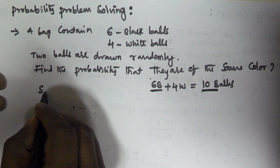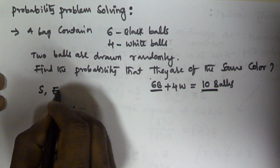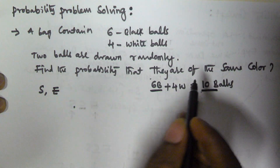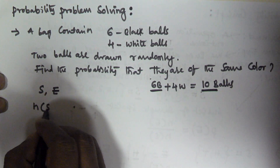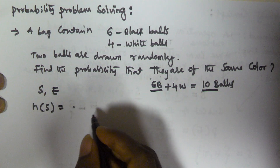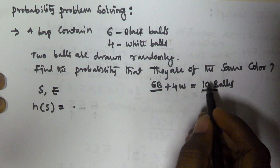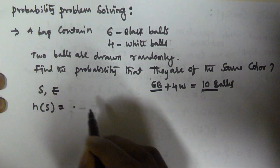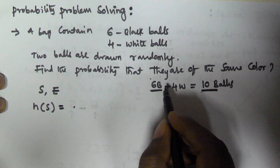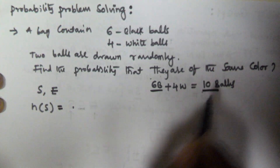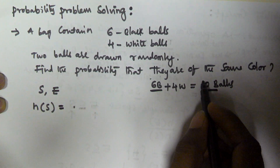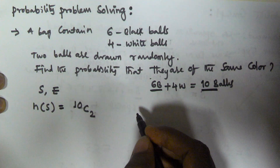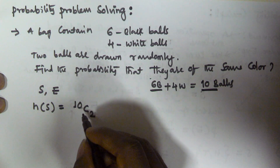Let S be the sample space and E be the event. E is the event of selecting both balls of the same color. Then n(S), the number of elements in the sample space, means we are selecting 2 balls out of 10 balls. That will give our sample space, so n(S) is the number of ways of selecting 2 balls out of 10 balls, which is 10C2.